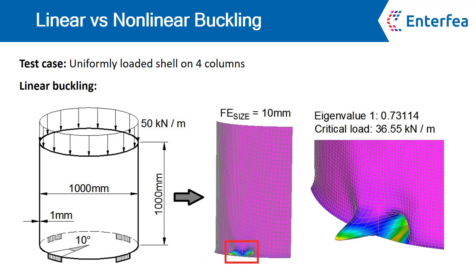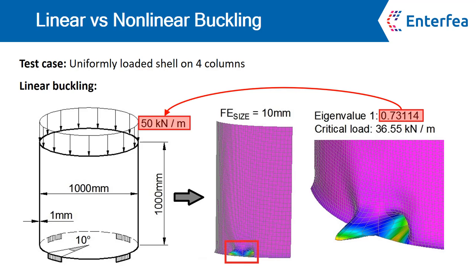In linear buckling, you can see that the first eigenvalue is 0.73. This means that if I multiply the applied load of 50 kN per meter by this value, I get a critical load of 36.55 kN per meter of circumference. This is the load at which the ideal shell loses stability due to buckling.